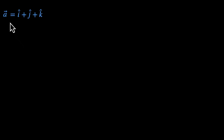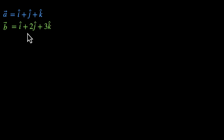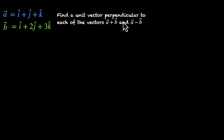In this video, we'll use the concept of cross products to find perpendicular vectors. Here's the first problem: vector a is i-cap plus j-cap plus k-cap, vector b is i-cap plus 2j-cap plus 3k-cap, and we need to find a unit vector perpendicular to each of the vectors a plus b and a minus b.